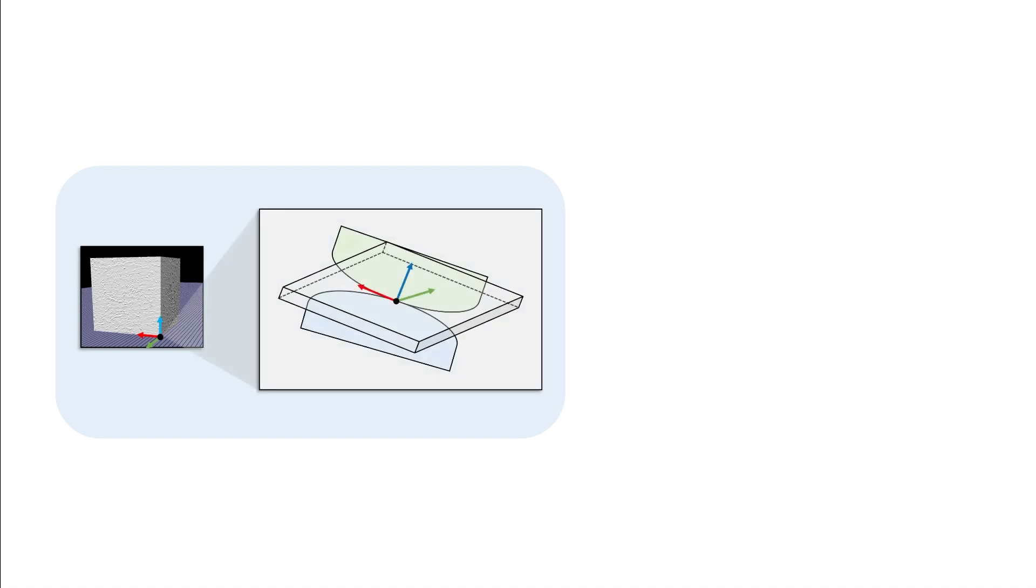We compute friction based on surface normal variations surrounding each contact point. We construct an orthographic viewing volume around each contact point with the goal of projecting the surface geometry surrounding the contact onto the viewing plane at the center of the volume.